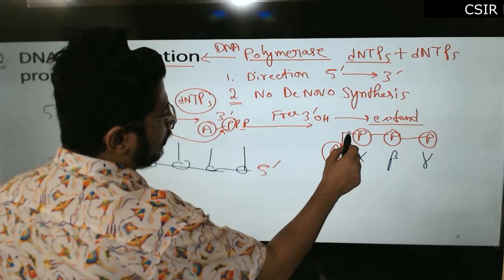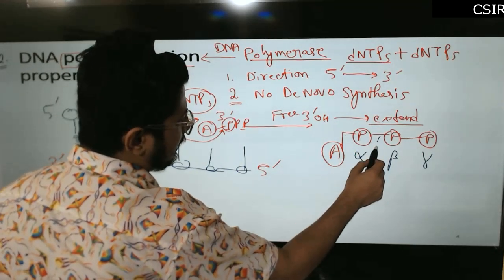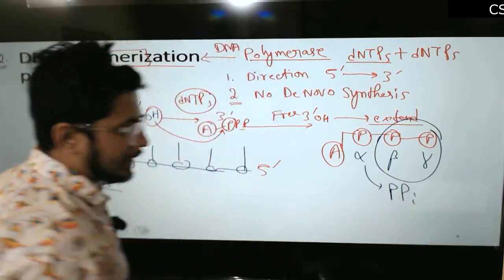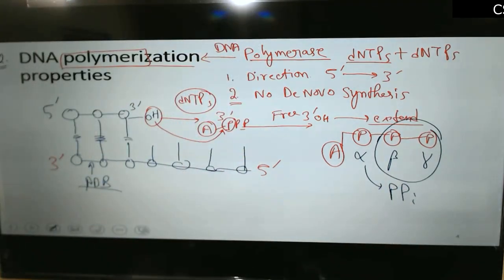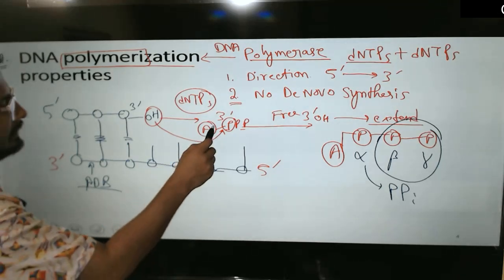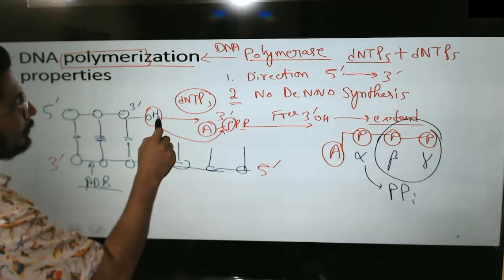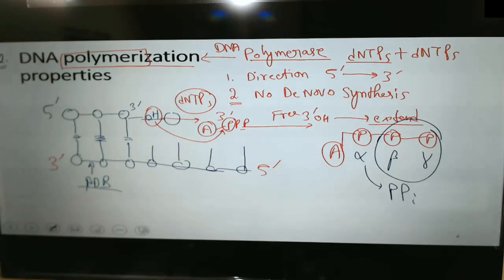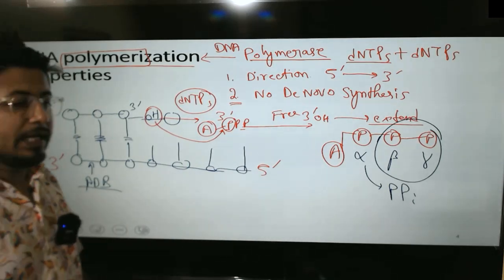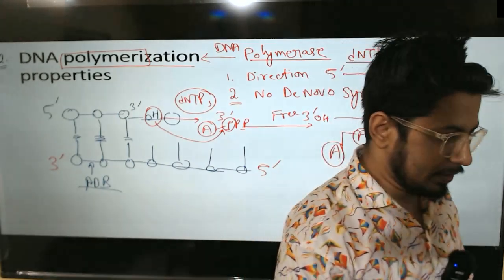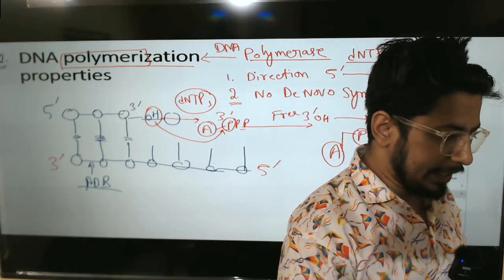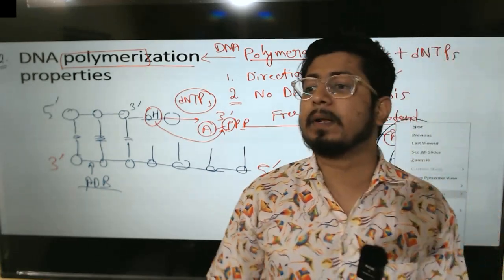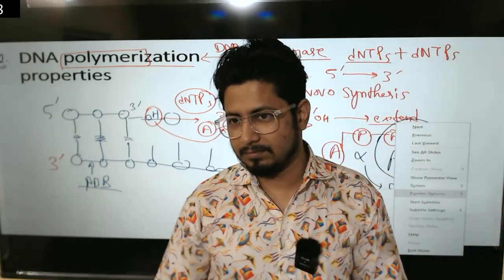The phosphate groups are named alpha (closest to the base), then beta, then gamma. The hydroxyl attacks the alpha phosphate, the alpha-beta bond is broken, beta and gamma phosphates are released as PPi, and the adenine with its phosphate group is attached to the growing strand. This is the polymerization process — DNA polymerase can only polymerize an existing 3' hydroxyl.